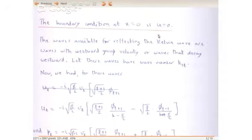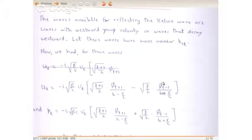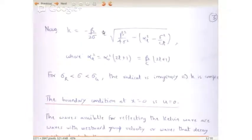Any frequency that lies between them will have complex K. The boundary condition at x equals 0 is u equals 0, as we have for all coastal solutions on the f-plane or the beta-plane. Waves available for reflection from the Kelvin wave are waves with westward group velocity or waves that decay westward — both are permissive. Let these waves have wave number K1_l. We say K1_l because they must be ones with the positive sign, which gives you the longer waves — only long Rossby waves, not short ones.